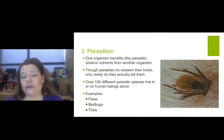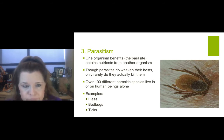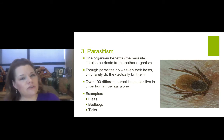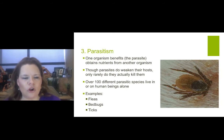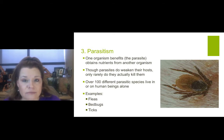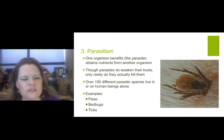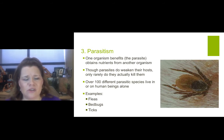When you're getting into the third type, which is parasites, then only one organism benefits — and it's always the parasite. They obtain nutrients from another organism. Though parasites do weaken their host, only a few will rarely kill them. You always want to be checking for ticks so you don't get Rocky Mountain Spotted Fever or some other type of Lyme disease. Over 100 different parasitic species live on or within human beings — and that's just on human beings, not including other animals.